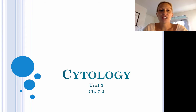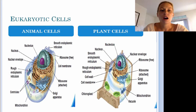Hi, today we're going to talk about eukaryotic cell structure and function. Before we do that, let's review. There are two main types of eukaryotic cells: animal cells and plant cells.